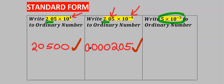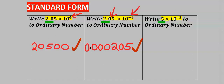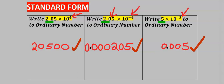Next, consider this standard form which we are going to write to an ordinary number. Step number one: consider the first significant number here, which is five. Step number two: consider the power, which is minus three. The negative symbolizes that there are three digits in front of this five — the digits must be zeros. Next, in front of the last digit we are going to input a decimal, and this is our answer.